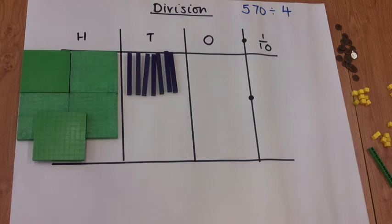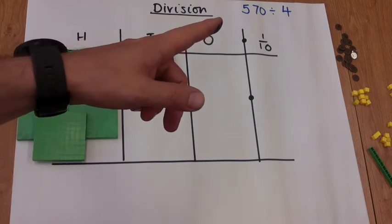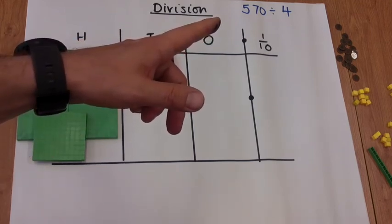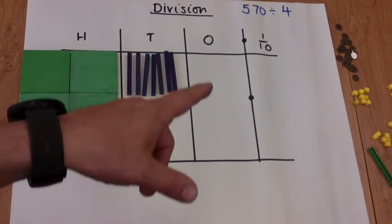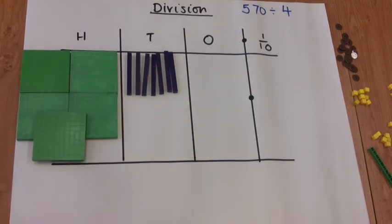The concrete method for division and the calculation we've chosen to look at is 570 divided by 4. So we've got a hundreds, tens, ones column. We've also got a tenths column with a decimal point. And we've partitioned 570 into that column.